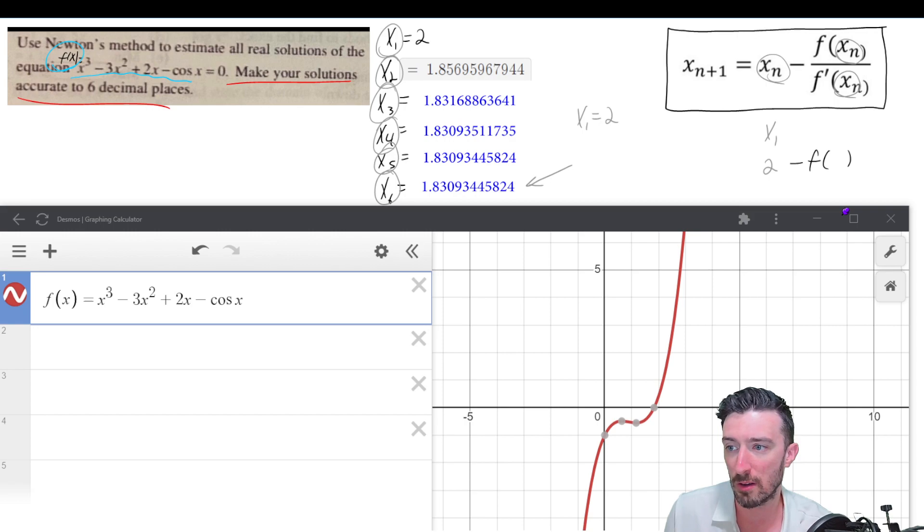Minus f(2) over f'(2). Okay, and what that's going to do is it's going to get us our next guess. So anyway, we want to figure out what 2 minus f(2) over f'(2) is.